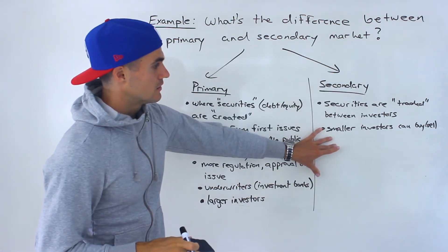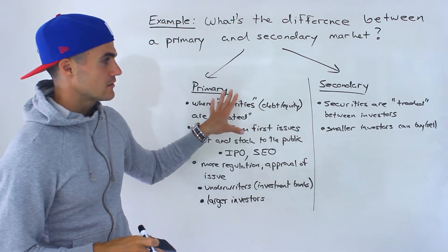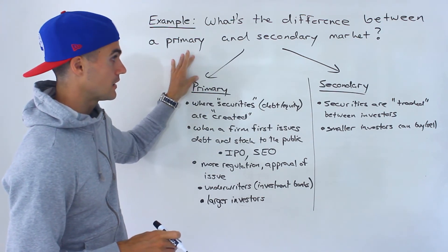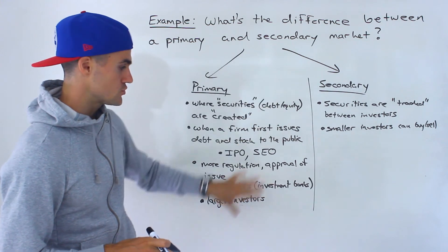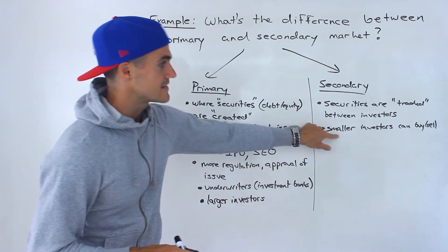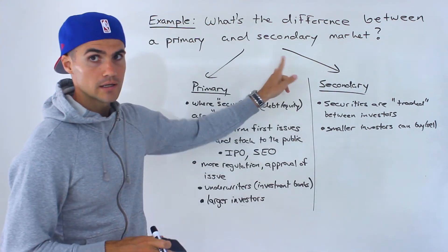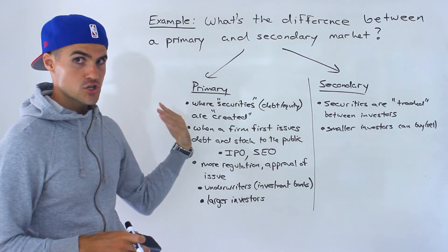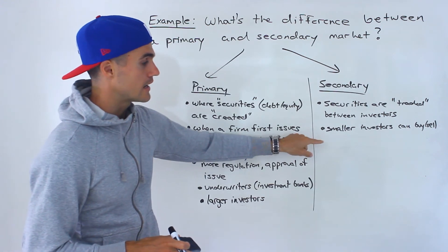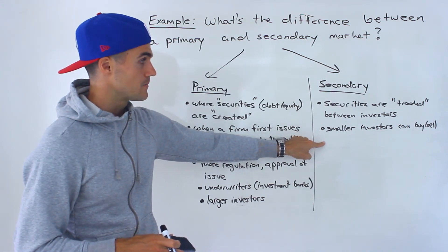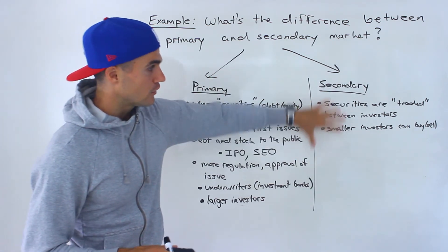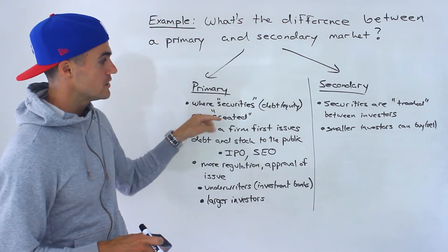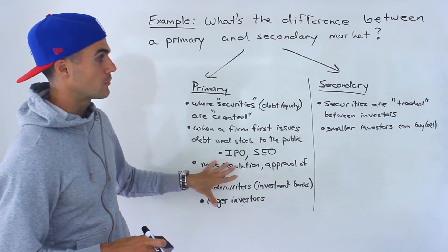So here, the company isn't necessarily involved anymore. In the primary market, it's the company selling to investors — usually larger investors. And then in the secondary market, it's between investors. Now, companies can repurchase shares, and usually they're done as open market repurchases. So the company can get involved again in the secondary market, but they're not issuing new securities. Whenever they're issuing new securities, it's in the primary market.